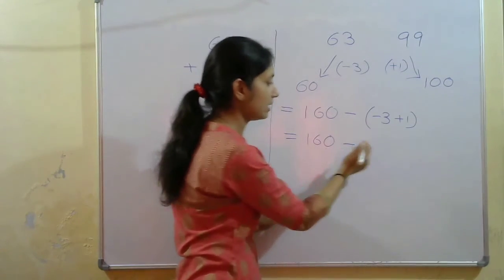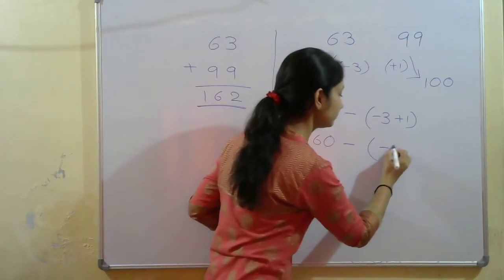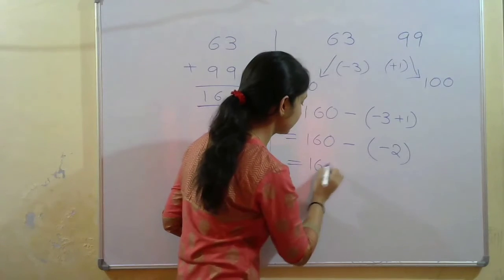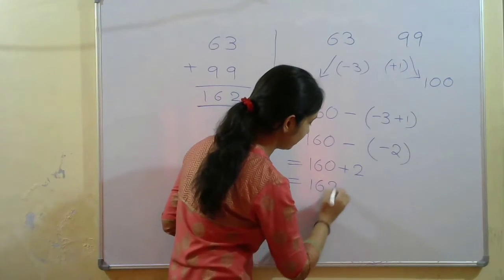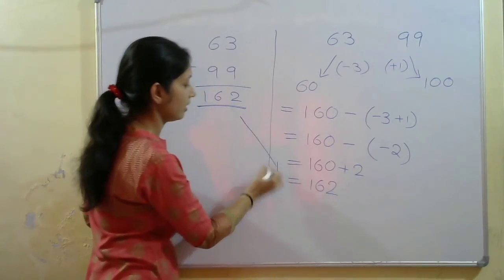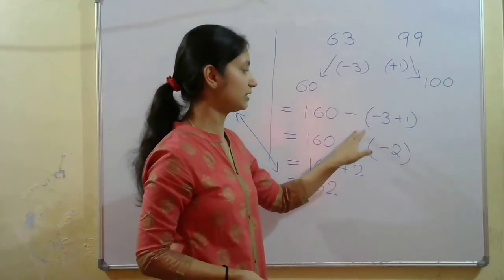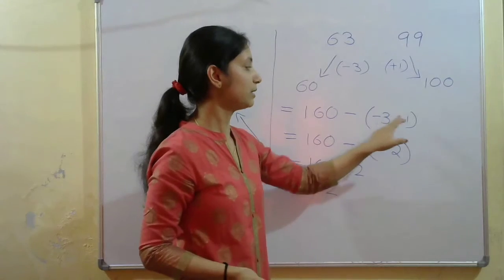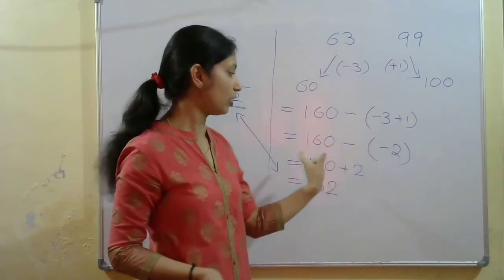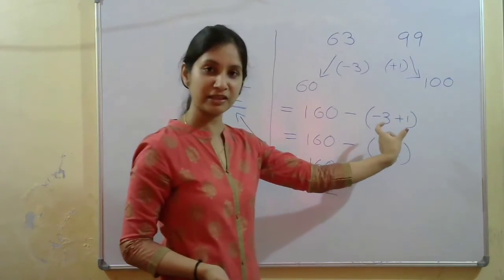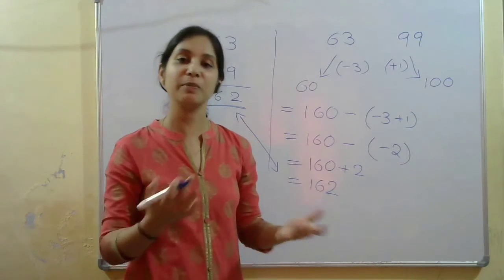Minus 3 plus 1 gives minus 2. So 160 minus (minus 2) gives 160 plus 2 equals 162. You can also split it as: minus minus 3 is plus 3, and minus plus 1 is minus 1, so plus 3 minus 1 gives plus 2, and 160 plus 2 is 162. If you practice these types of problems, it will be very easy.